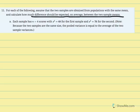Part A: each sample has equal size of 4, with variance of 68 for the first sample and variance of 76 for the second. Since the two samples are the same size, the pooled variance equals the average of the two sample variances. Because variance was given instead of sum of squared deviations, we'll use the alternate equation for pooled variance. Ultimately, this question asks for the estimated standard error of the mean difference, and to calculate that we need pooled variance.